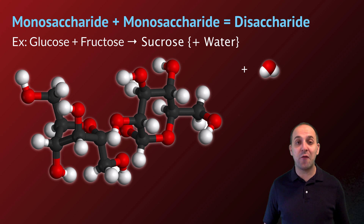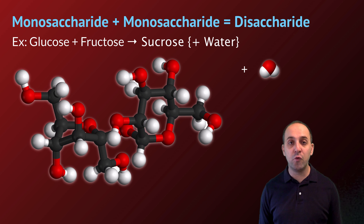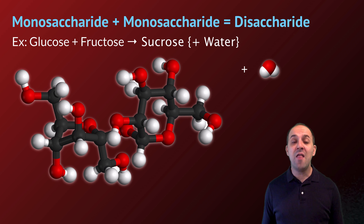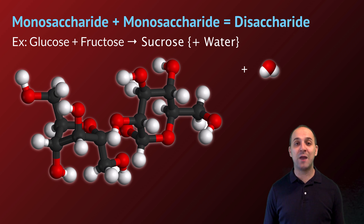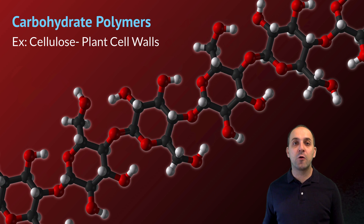Because carbohydrates can exist in combinations, we can start sticking them together. Here's a disaccharide formed by joining two monosaccharides — a glucose and a fructose — making sucrose, also known as table sugar. A water molecule is shown here as a reminder that anytime we join biological molecules together in a dehydration synthesis reaction, water is produced.